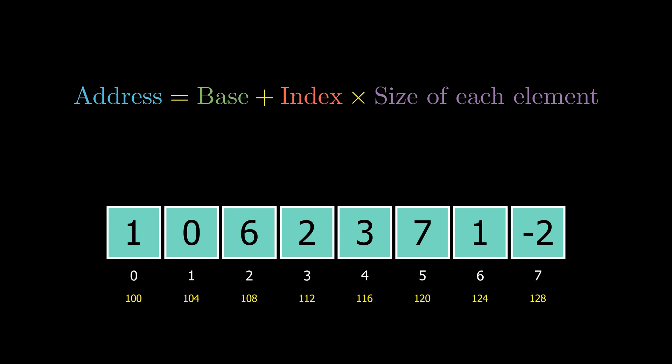So let's say you want to find out the memory address of the element at 4th index. You can simply use the formula where the base address is 100, the index value is 4, and the size of each element is also 4. Calculating this will give you the memory address of the element at 4th index, ultimately getting the element at that address.